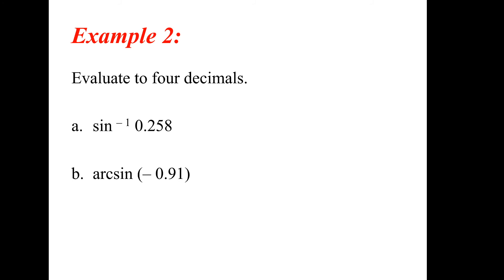This time you want to use the calculator. Go to second, then inverse of sine, and put in the ratio. For the first one, you end up with 0.2610 radians, since it's a small decimal. For arc sine of negative 0.91, it's negative 1.1433. In the next couple of examples we'll talk about why the result is negative.